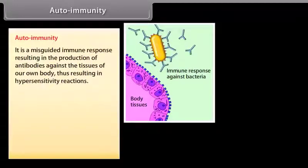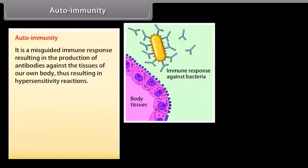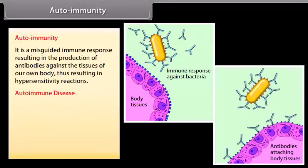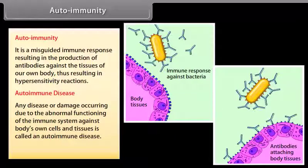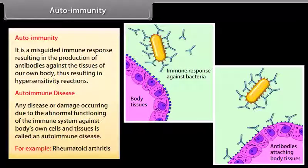Autoimmunity is a misguided immune response resulting in the production of antibodies against the tissues of our own body, thus resulting in hypersensitivity reactions. Any disease or damage occurring due to the abnormal functioning of the immune system against the body's own cells and tissues is called an autoimmune disease — for example, rheumatoid arthritis.